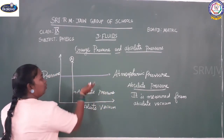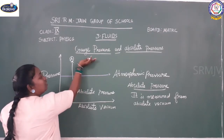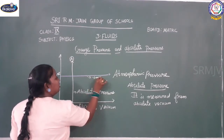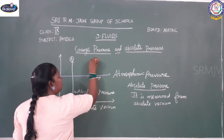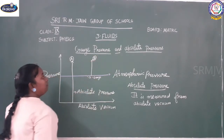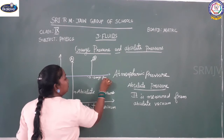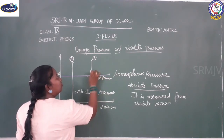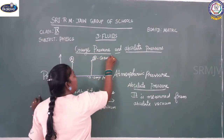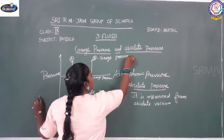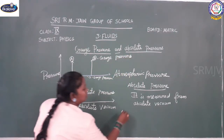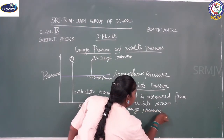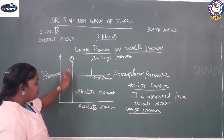Now we are going to find what is gauge pressure. Gauge pressure works above the atmospheric pressure. We consider atmospheric pressure as zero for gauge pressure. From here we make a point B, and above the atmospheric pressure we can measure what is the gauge pressure.